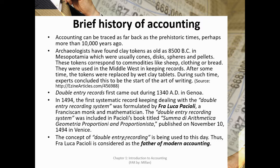In 1494, the first systematic record-keeping dealing with the double-entry recording system was formulated by Luca Pacioli, a Franciscan monk and mathematician. The double-entry recording system was included in Pacioli's book titled Summa de Arithmetica, Geometria, Proportioni, et Proportionalità, published on November 10, 1494 in Venice. The concept of double-entry recording is being used to this day. Thus, Luca Pacioli is considered the father of modern accounting.